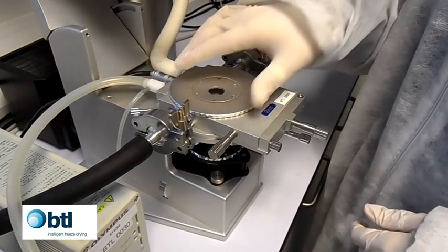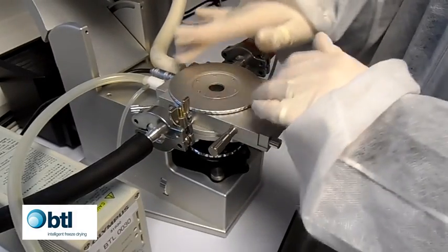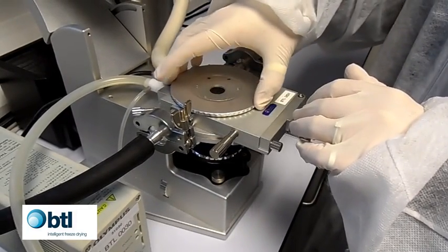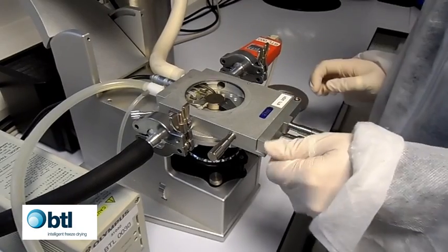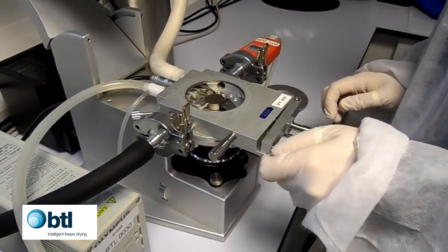Tilt the arm of the imaging station back to allow easy access to the Lio stage. Unscrew and remove the lid. Unscrew and open the door of the sample loader.